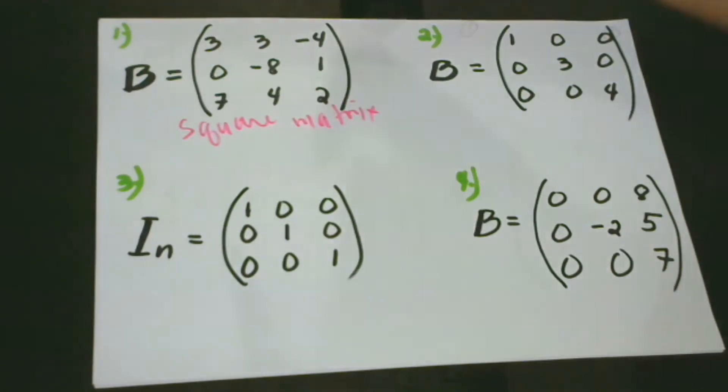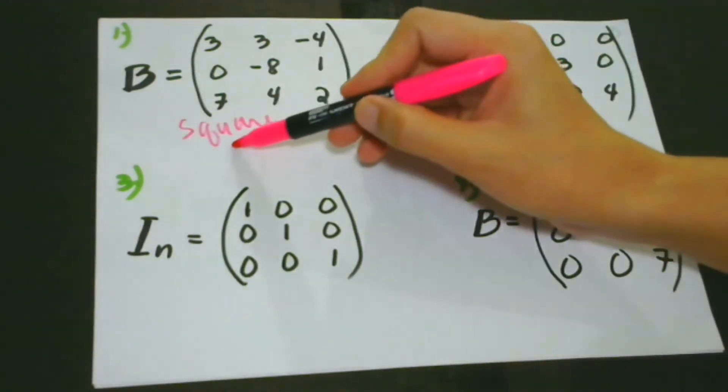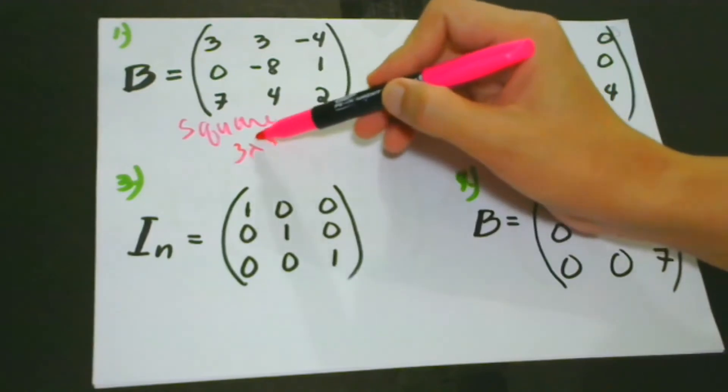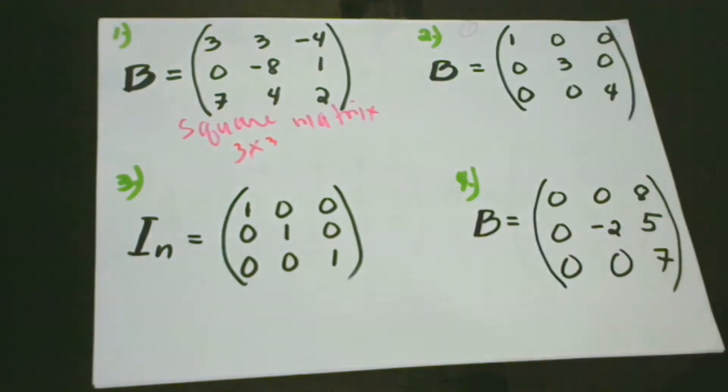And how many columns do we have? 1, 2, 3. So this is 3 by 3. It's perfect. 3 columns and 3 rows. They have the same number of columns and rows.